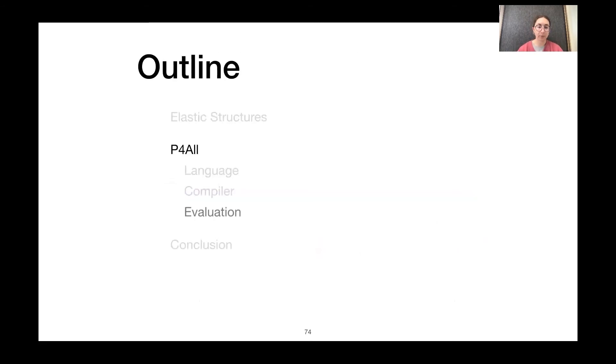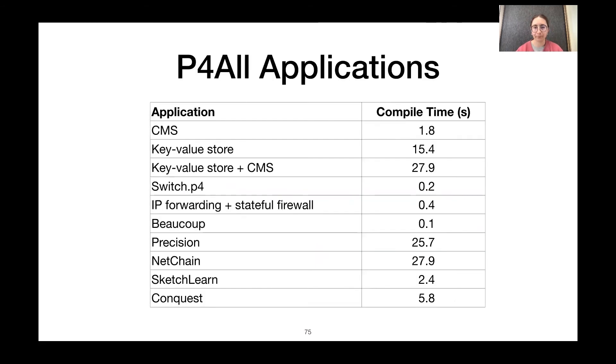So, now that we've talked about the language and compiler, I'll go through a little bit of the evaluation that we did. So, this is a selection of applications that we've written in P4All and compiled. Their compile times range from under one second to just under 30 seconds. And the application that had the longest compile time took about eight minutes. So, we found that we were able to express a wide variety of different applications in P4All.